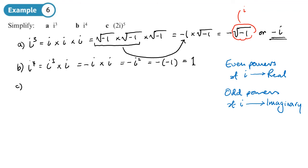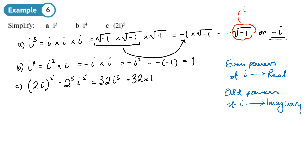Next: (2i)⁵, which is the same as 2⁵ × i⁵. 2⁵ = 32, so we have 32 × i⁵. Since i⁴ = 1, i⁵ = i⁴ × i = 1 × i = i, so the answer is 32i. We've got an odd power and we've ended up with something imaginary, so that rule does seem to hold. You should now be able to do Exercise 1c on page 6.